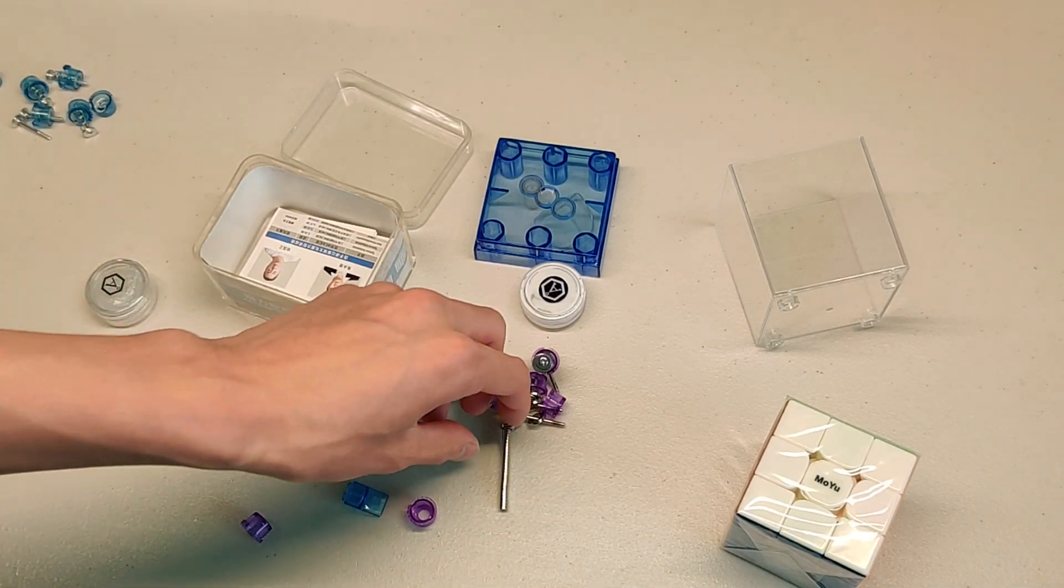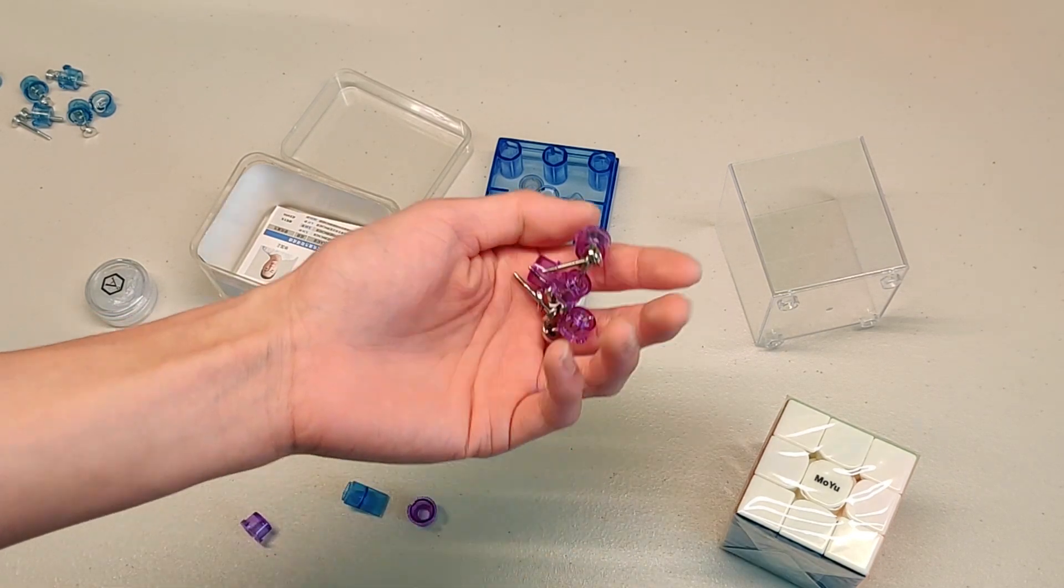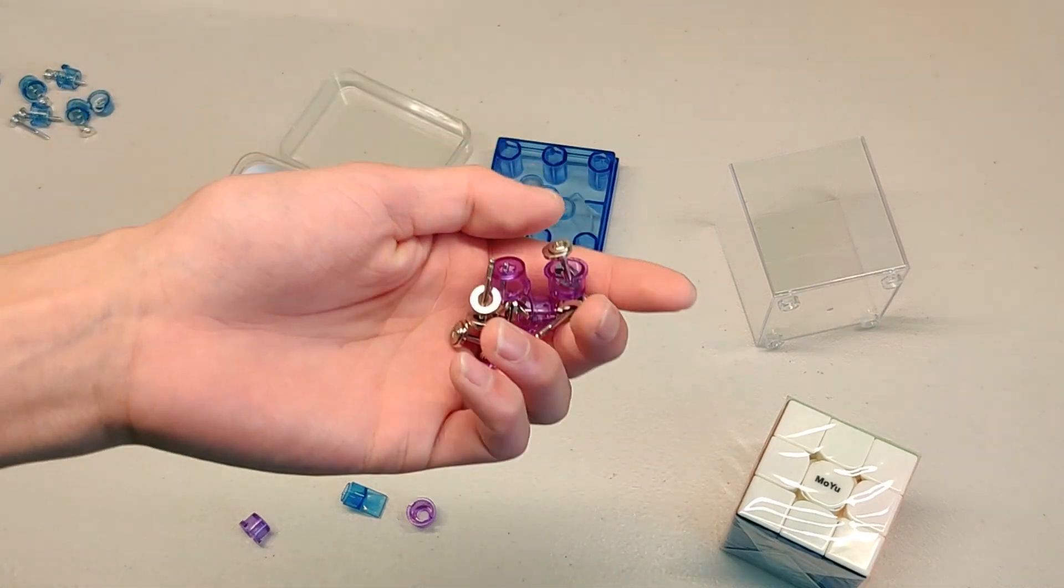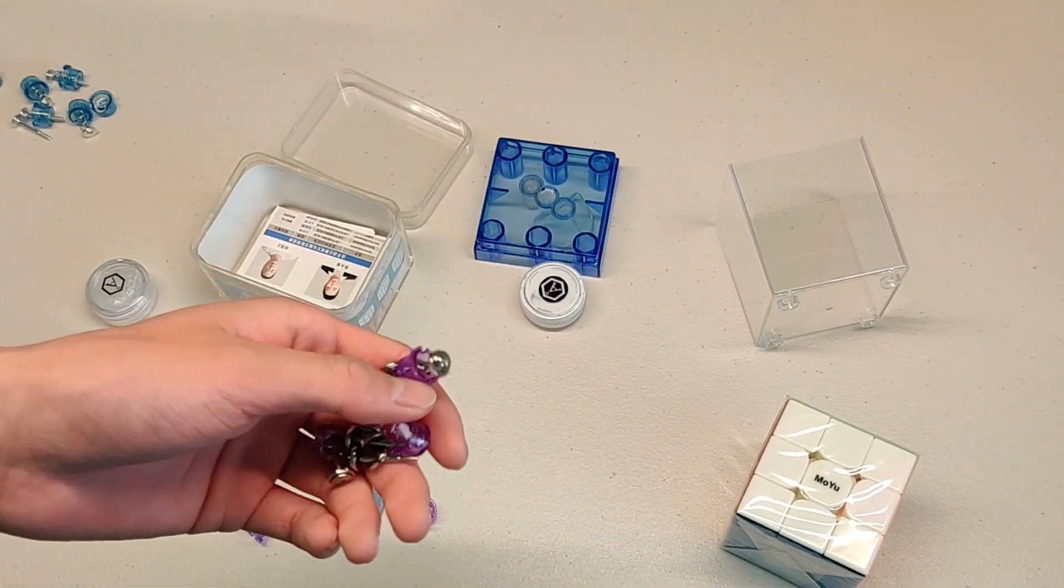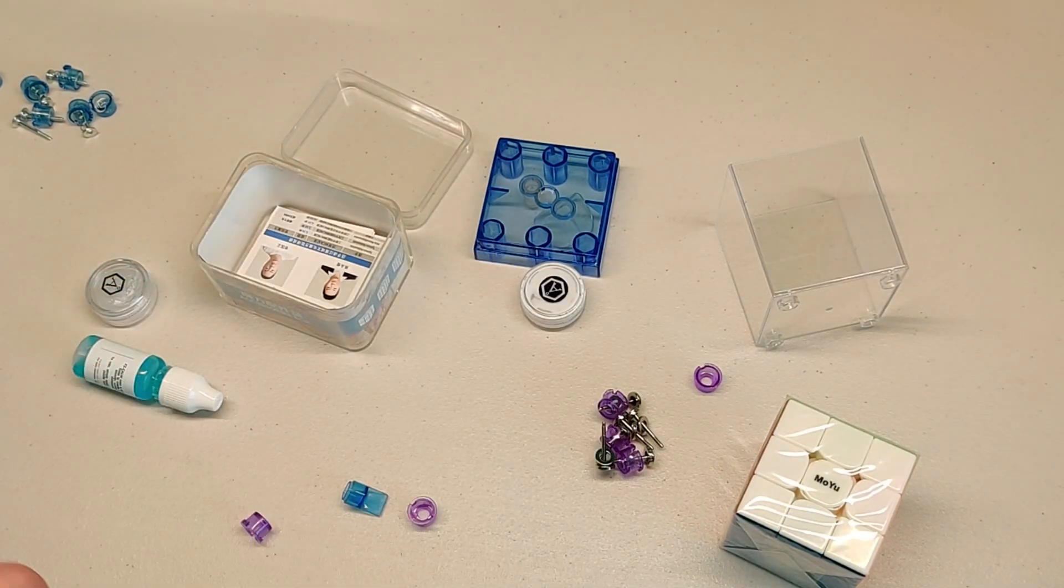Alright, so we have here all the magnets we're going to use. We have our maglev. These are maglev screws and magnets from, I think, either a WRM, a WRM V9, or a YS3M. I'm not sure which, but it's the same thing, so it'll work.